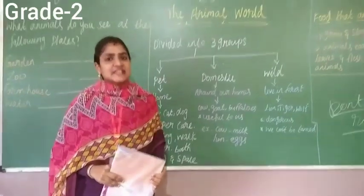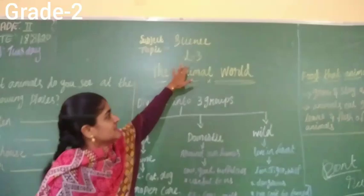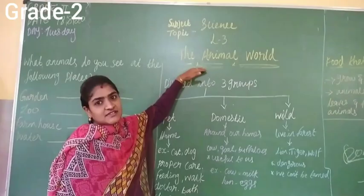In this class we are going to start a new lesson — Lesson Number 3, The Animal World. Everyone take out your Science textbook and open page number 153, Lesson Number 3, The Animal World.